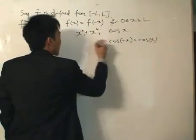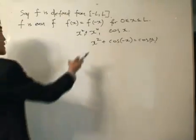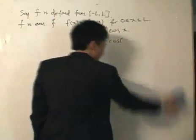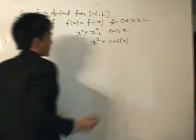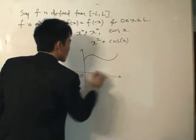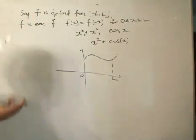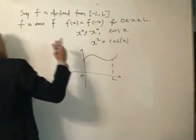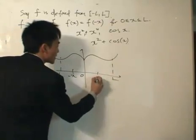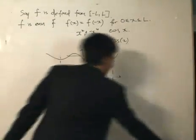We can also add even functions together and the result will still be an even function, because if we put minus x inside, we can cancel out the minus sign. Graphically, what does that mean? Well, if we have a certain function defined from 0 to L, and f is even, we reflect the function from 0 to L across the y-axis to get the part from minus L to 0. An x will give a certain value, and minus x will give that same value — no surprise, since we are reflecting about the y-axis.